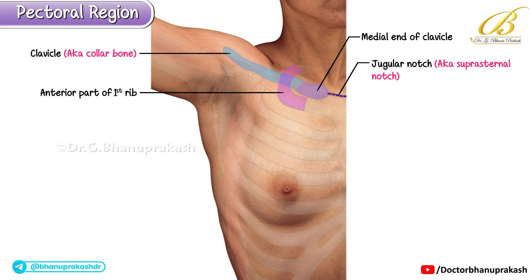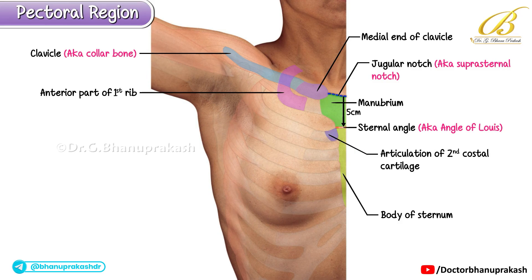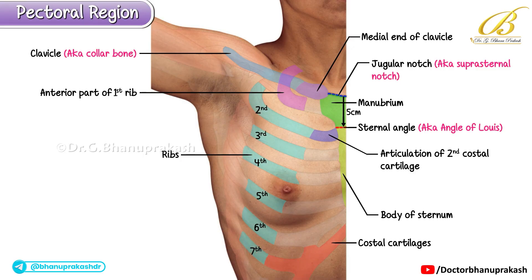If you trace your finger downward from the suprasternal notch along the midline, you'll feel a blunt transverse ridge about five centimeters below. This is the sternal angle, also known as the angle of Louis. This ridge marks the junction between the manubrium and the body of the sternum, and importantly it corresponds to the articulation of the second costal cartilage with the sternum. From here the other ribs can be identified by counting downward starting from the second. The costal cartilages of the seventh ribs form the subcostal margin.